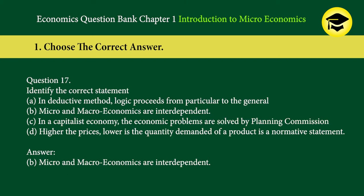Question 17: Identify the correct statement. A. In deductive method, logic proceeds from particular to the general. B. Micro and macroeconomics are interdependent. C. In a capitalist economy, the economic problems are solved by a planning commission. D. Higher the prices, lower is the quantity demanded of a product — is a normative statement. Answer: B. Micro and macroeconomics are interdependent.